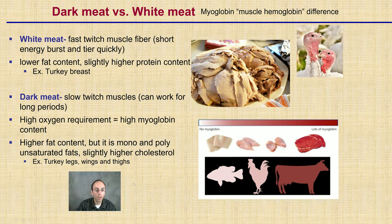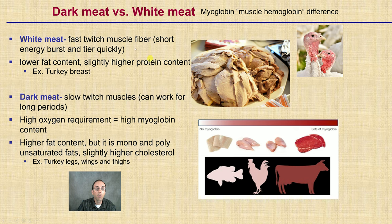At Thanksgiving, you might notice there's white meat and dark meat. Looking at chickens and turkeys, this relates to myoglobin, which is muscle hemoglobin. White meat is fast-twitch muscle fiber — short energy bursts, but it tires quickly. It has lower fat content but slightly higher protein content; this is the turkey breast. Dark meat, if you prefer it, is slow-twitch muscle — it can work for very long periods of time, has a high oxygen requirement and therefore high myoglobin content, higher fat content with mono and polyunsaturated fats, and slightly higher cholesterol. This is found in the turkey legs, wings, or thighs.